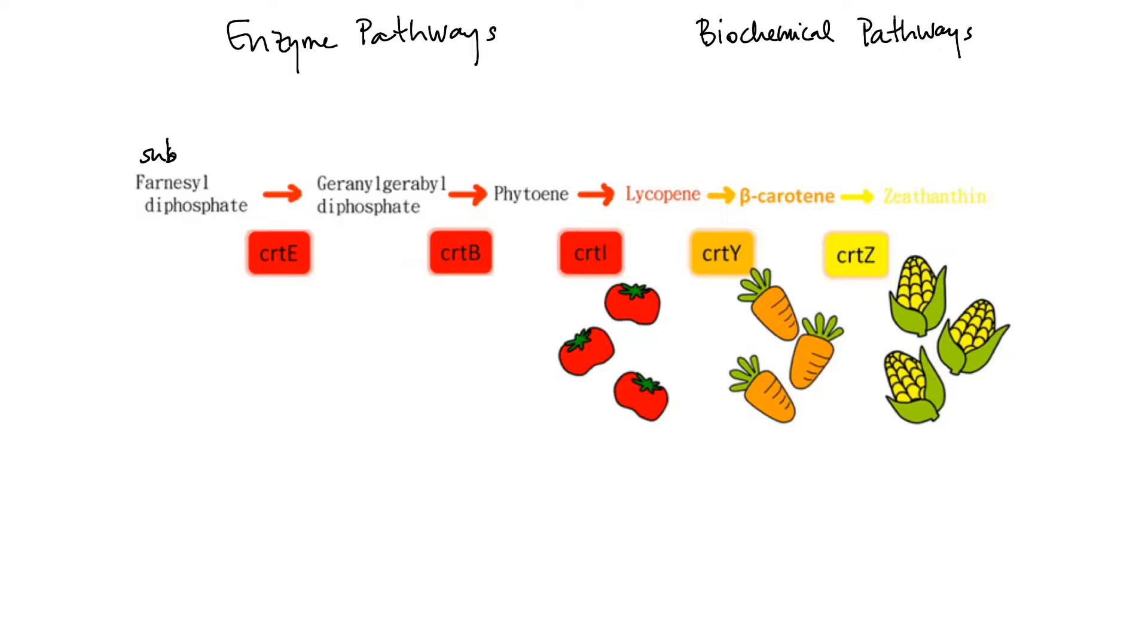We're starting with the initial substrate, farnesyl diphosphate, and the final product all the way over here is zeaxanthin. Farnesyl diphosphate is actually uncolored, it's an uncolored molecule, whereas zeaxanthin is a colored molecule, and you can see down here that many of our fruits and vegetables are colored by these products of this enzyme pathway.